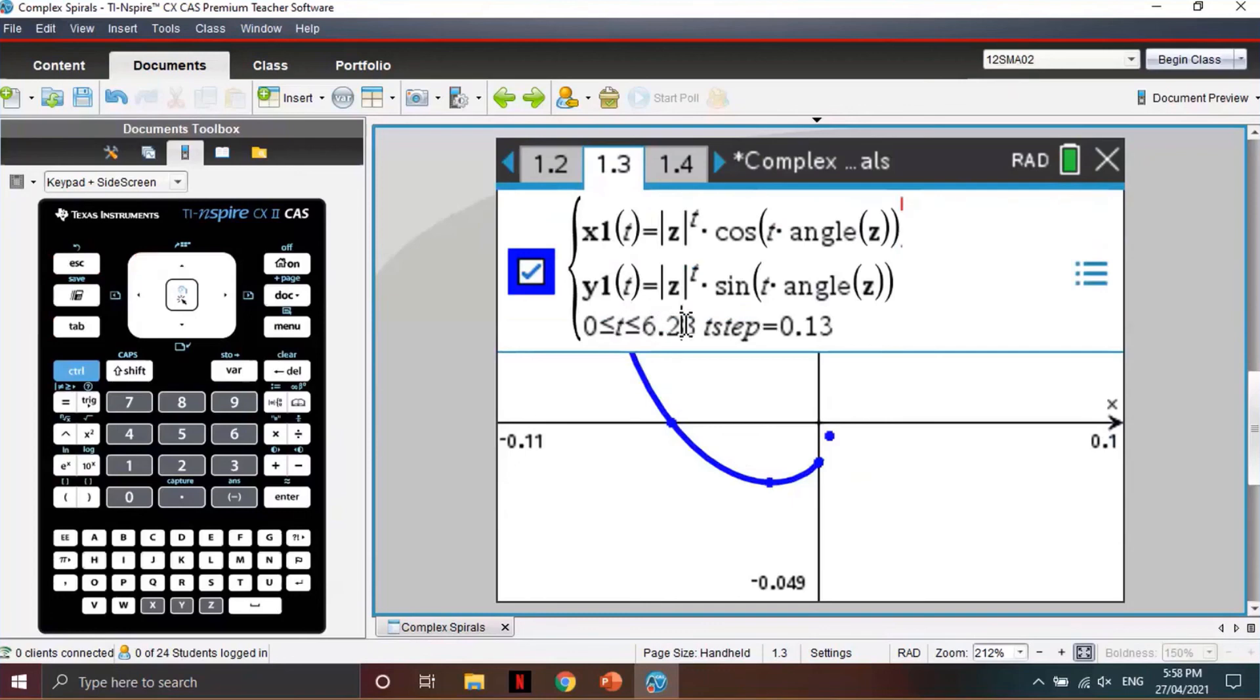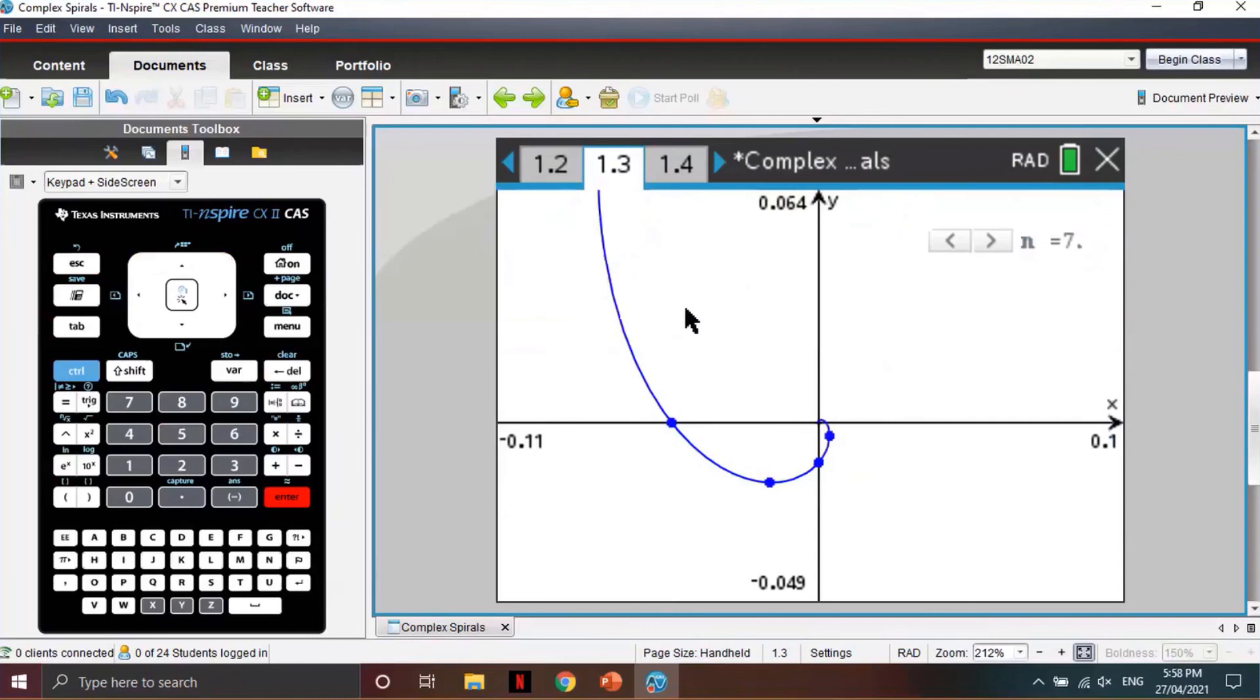So for example, we may wish to increase this to 15 and press Enter, and it'll generate more of the spirals to see what's happening there. And that should conclude all of the key CAS skills needed for this complex spirals investigation task.